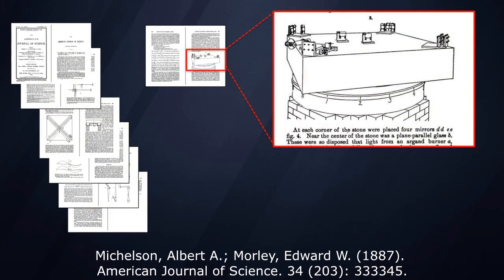And believe it or not, that giant table there is floating on a pool of mercury, liquid mercury that allowed them to rotate this and sample this experiment over and over again at various angles as they went about their experiment.